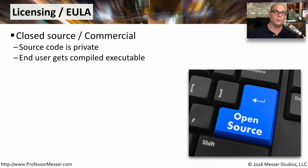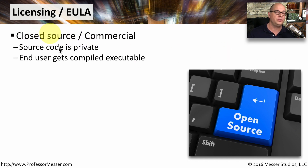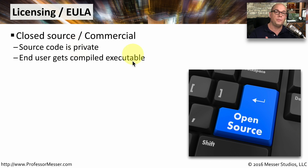Much of the software that we use is categorized in a number of different ways. It's very common, for example, to find commercial software as being closed source software. That means that all of the source code for this particular application is private. We don't have access to the source. As an end user, we're provided with the application executable, and we have no idea what type of coding is inside of that executable.